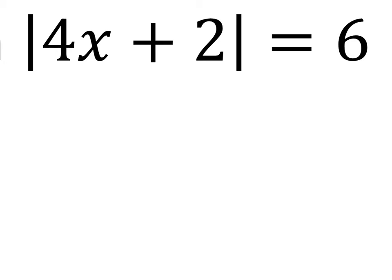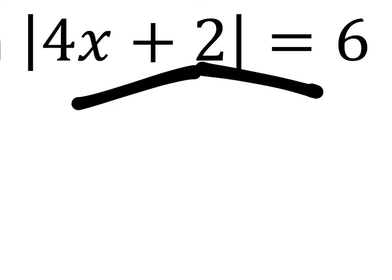So in this problem, notice that the absolute value is on its own side of the equal sign, and there's no absolute values over here. What this allows us to do is to split this up into two separate equations.